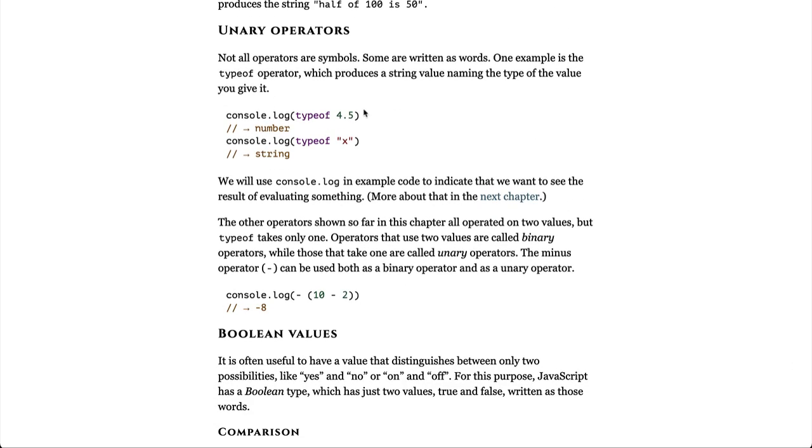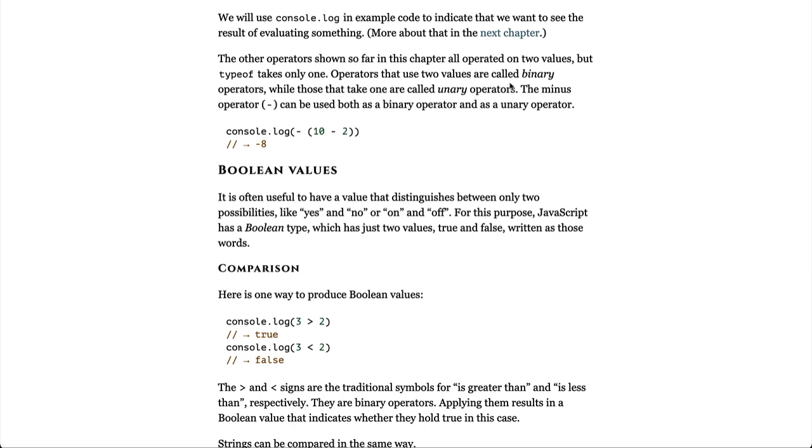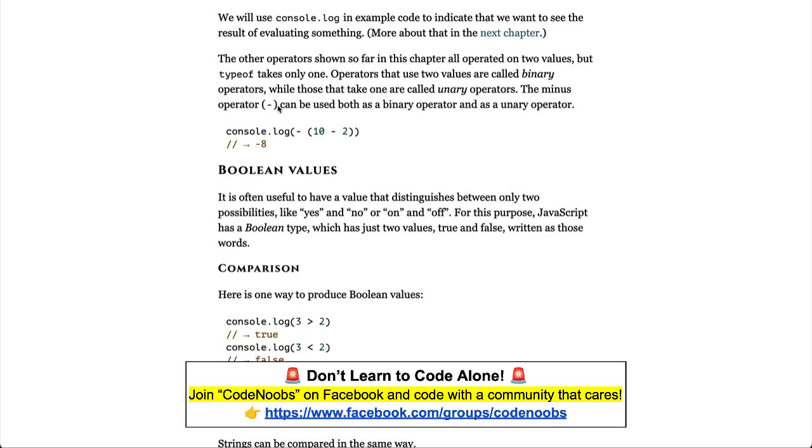Unary operators. Not all operators are symbols. Some are written as words. One example is a typeof operator which produces a string value naming the type of value you give to it. We will use console.log in example code to indicate whether we want to see the result of evaluating something. More about that in the next chapter. The other operators shown so far in this chapter all operated on two values, but typeof takes only one. Operators that use two values are called binary operators, while those that only take one are called unary operators. The minus operator can be used both as a binary operator and as a unary operator.